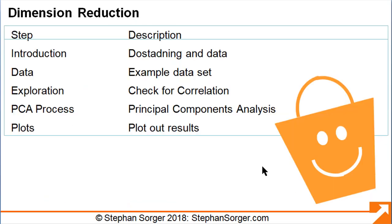In this video, we covered an introduction to dimension reduction and demonstrated the process using an example dataset. We showed how to check for correlation and execute the principal components analysis process in R. We also displayed the results using different plots to show the power of PCA. Thank you for watching. If you found this video helpful, please subscribe to the channel.